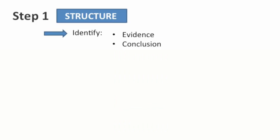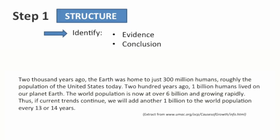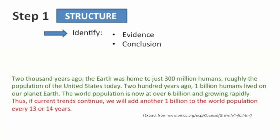The first step is to look at the structure of the argument. Start by identifying the evidence and the concluding sentence or sentences. To identify the conclusion, look out for concluding words like 'thus', 'so', or 'therefore'. Have a look at the following example. The conclusion is shown here in red, while the evidence precedes it in green.